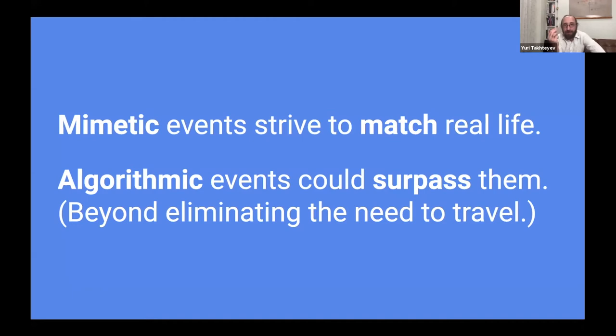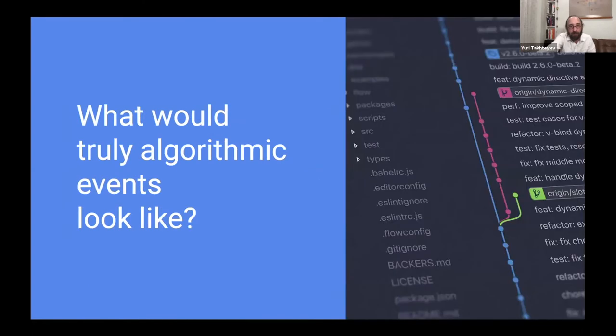So why is that interesting to me? Well, the main thing is that mimetic events, like events like video, they strive to match reality. So far, they've usually fallen short, they're getting closer, but at best, apart from the fact that you don't need to travel, they try to approach reality. They just try and increasingly suck less and less. Now, algorithmic events, events where reality gets sort of sliced and diced, have the opportunity to potentially surpass reality. We could actually be talking about online events that are better than physical events ever have been. And when I say better, I mean beyond just eliminating the need for travel.